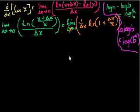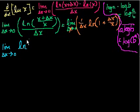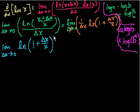That comes from when you take something to an exponent and then to another exponent — you multiply those two exponents. So this expression becomes the limit as delta x approaches 0 of the natural log of (1 plus delta x over x) to the 1 over delta x power. Remember, we're taking the natural log of this entire thing and then taking the limit as delta x approaches 0.